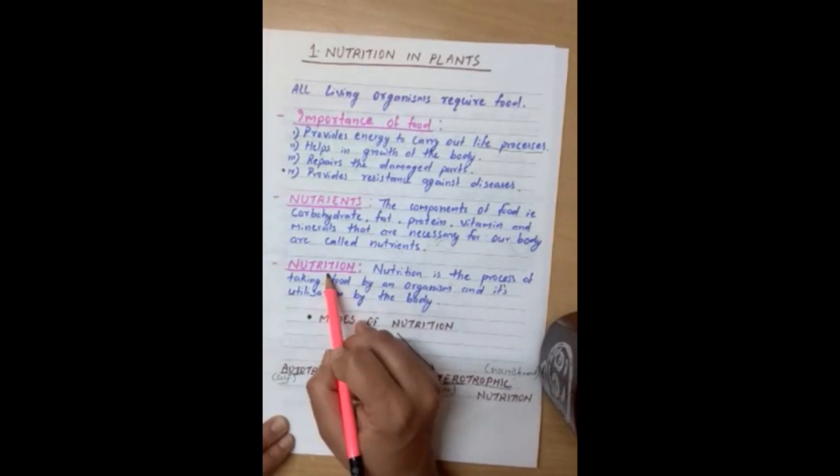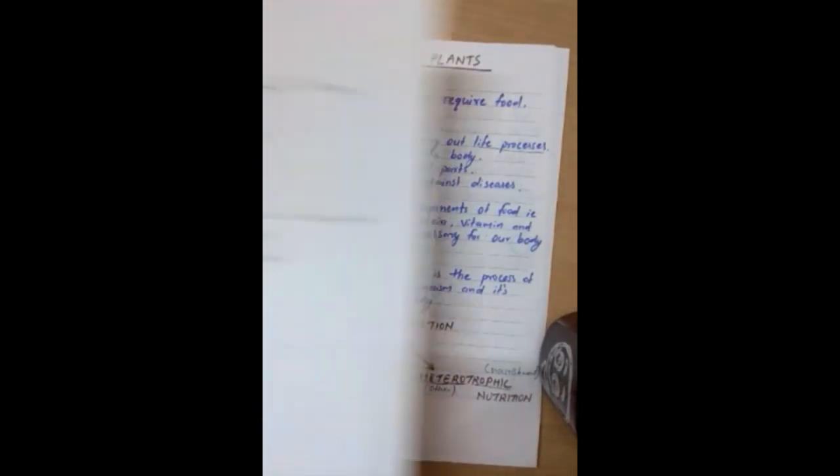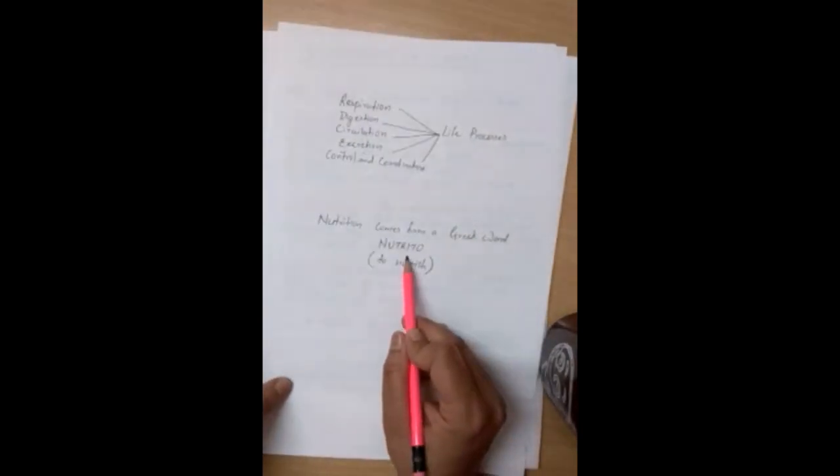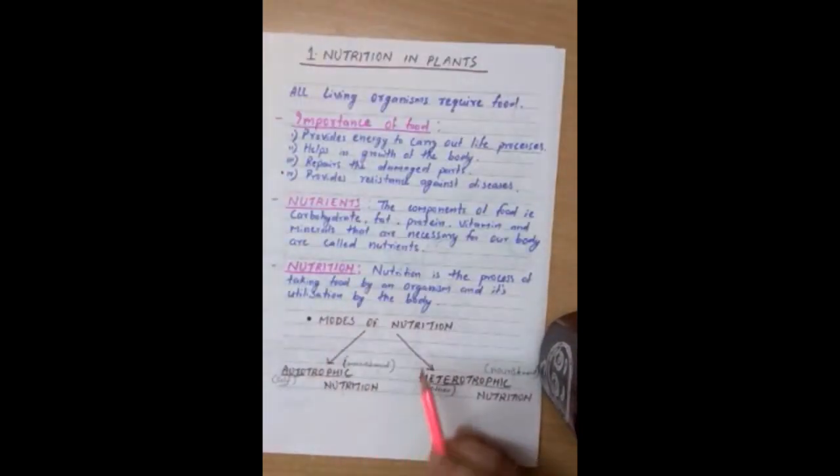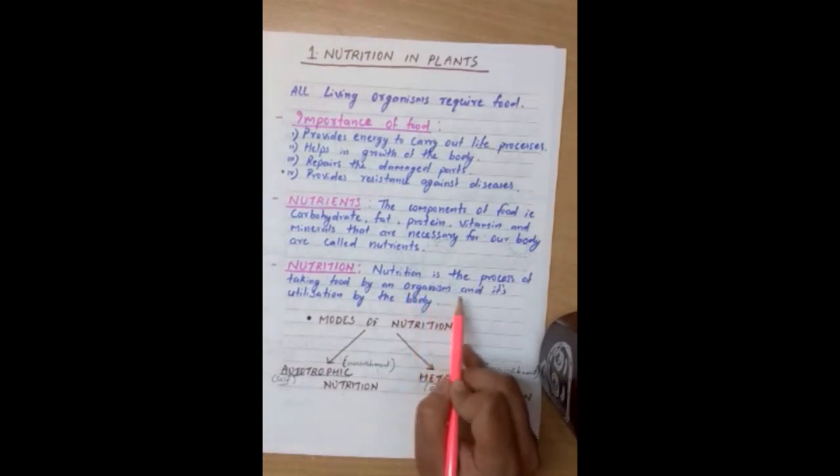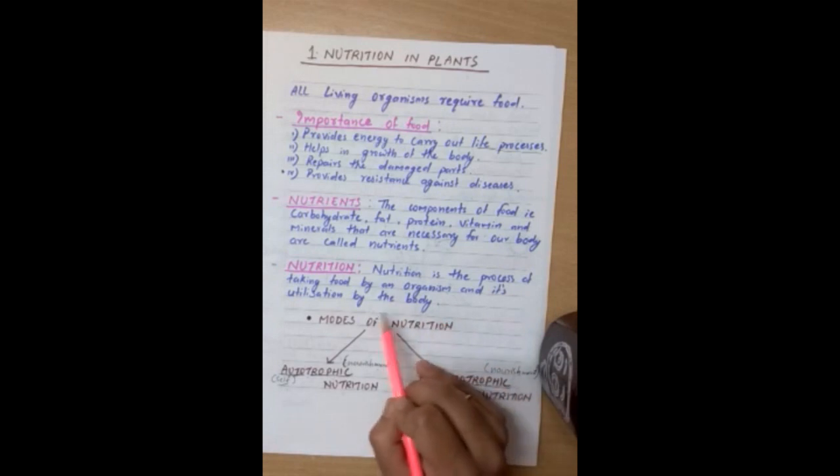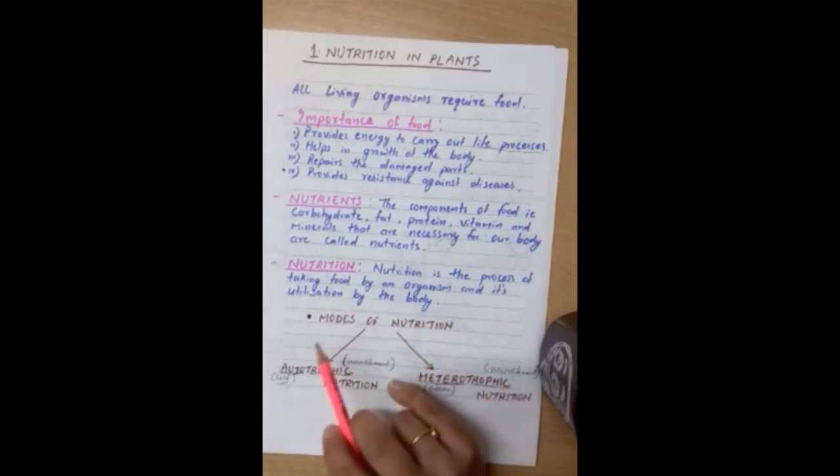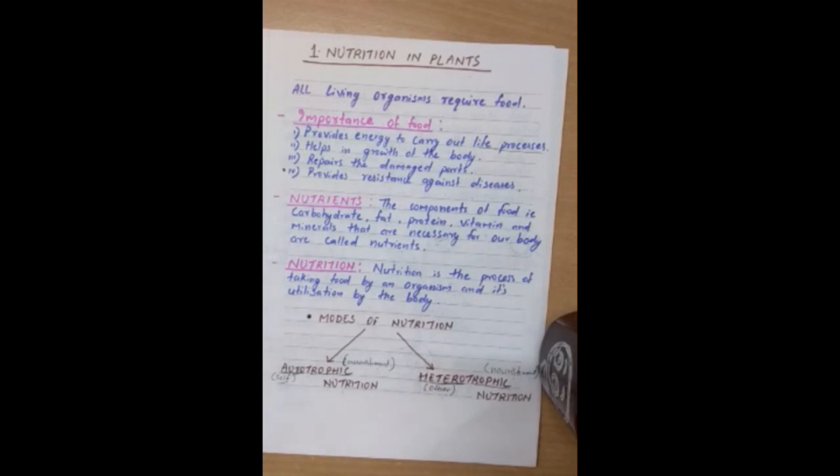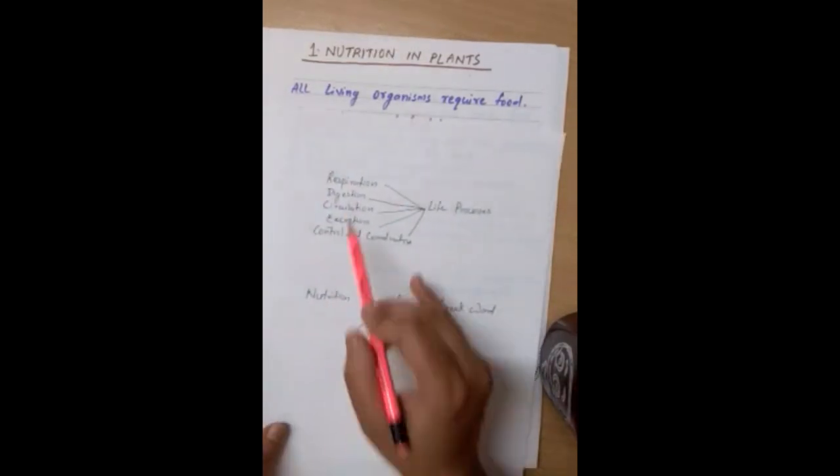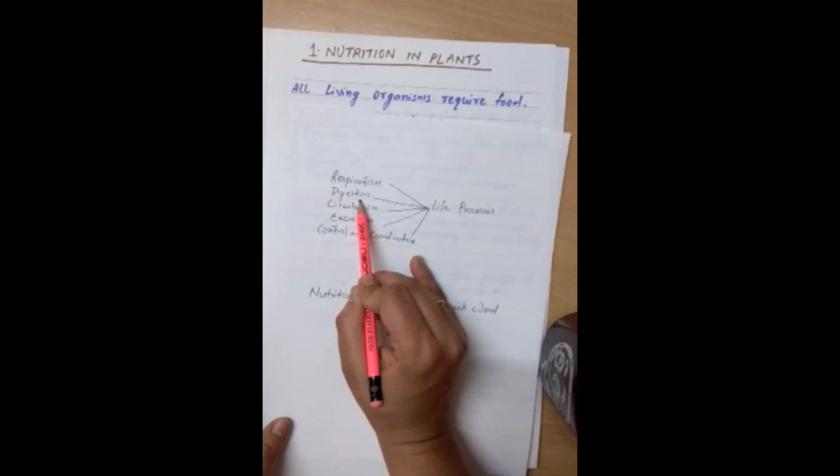Now, let's define the term nutrition. Nutrition comes from a Greek word Nutrito. That means to nourish. Nutrition is the process of taking food by an organism and its utilization by the body. Nutrition not only means simply just eating food but it also deals with the utilization of food by the body.